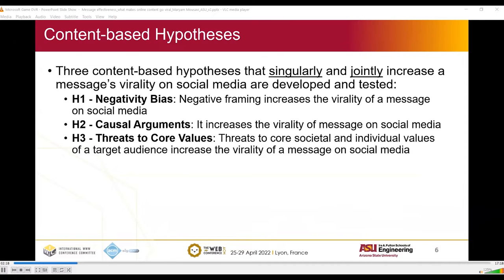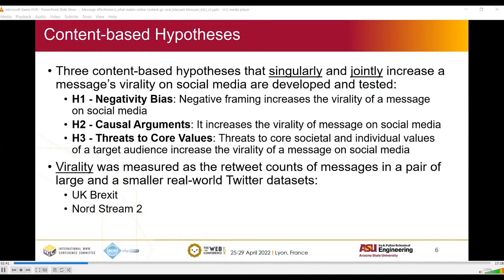In this research, we hypothesize three hypotheses that singularly or jointly will increase a message's virality on social media. The first one is negativity bias — we believe that having a negativity bias in a message will increase its virality. The next one is causal arguments, which increase the virality of a message. The last one is threats to core societal and individual values of a target audience, which will increase the virality of a message on social media.